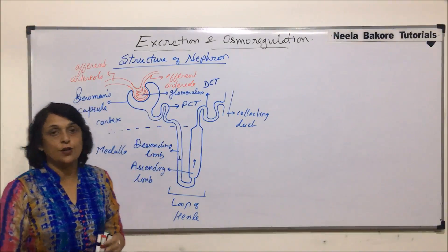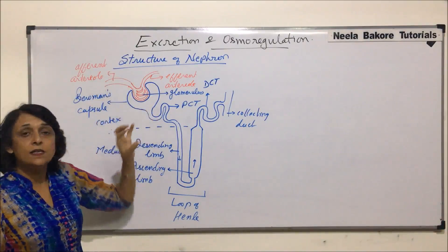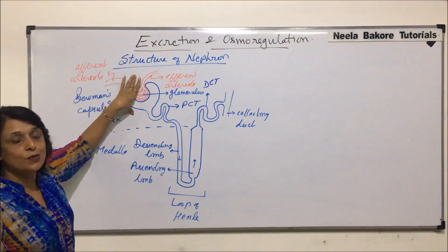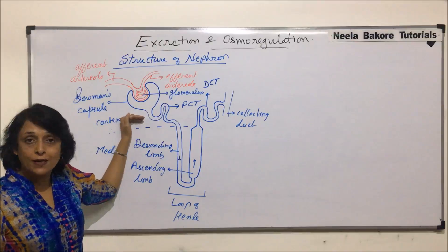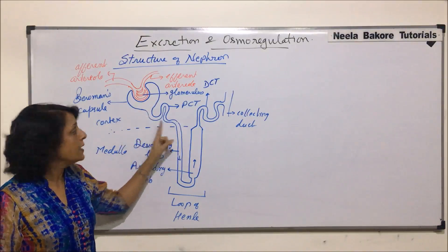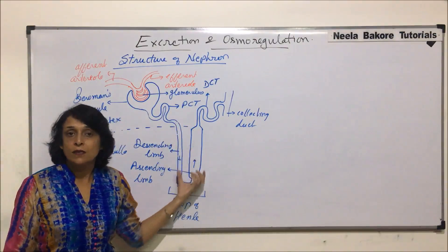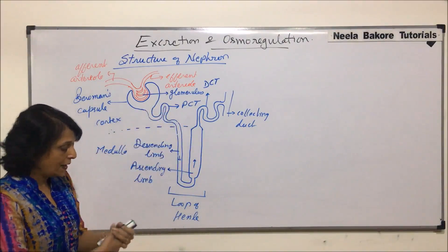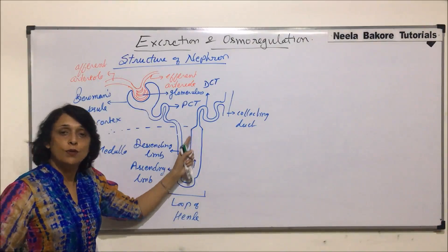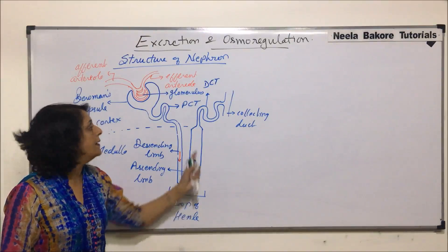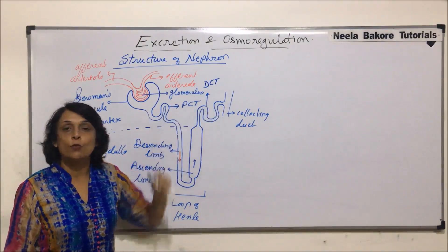The Bowman's capsule and the glomerulus together are known as the renal corpuscle or Malpighian body. So the parts of a nephron are: a cup-like structure called Bowman's capsule containing a capillary network called glomerulus — together the Malpighian body or renal corpuscle. Then tubes: the proximal convoluted tubule in the cortex; the loop of Henle with descending and ascending limbs; the distal convoluted tubule; and finally the collecting duct.